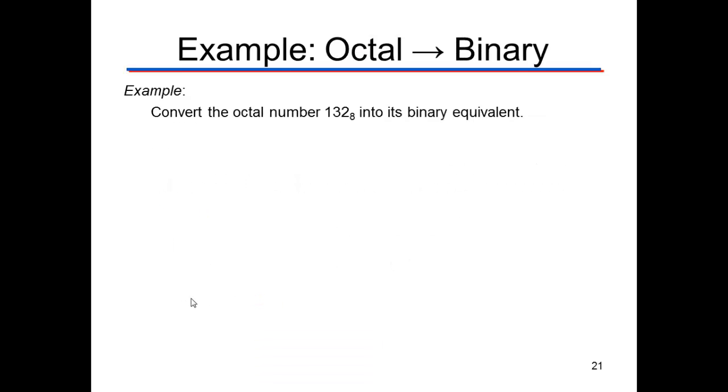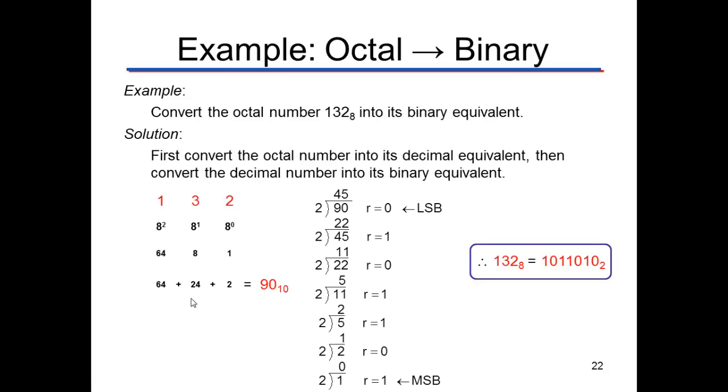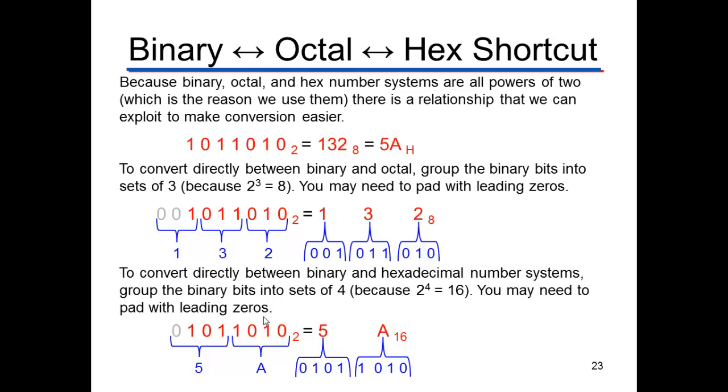If we want to go from octal to binary, we've got to go from octal to decimal, decimal to binary. So 1, 3, 2, we'll do 1 times 64 plus 3 times 8 plus 2 times 1 and get 90. Then we'll change that by successive division into binary and get our answer. So it's the same procedures, we're just having to combine them.